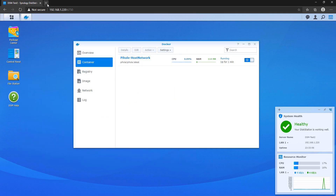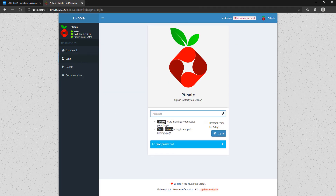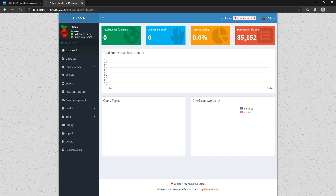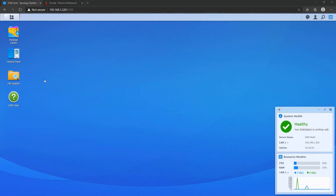We haven't actually configured the DNS portion for your clients yet. If you're not interested in the second option, you can skip to the end — I'll leave a timestamp in the description. The second option is setting up Pi-hole with a Mac VLAN network interface, which allows your Pi-hole instance to have its own IP address rather than using the host NAS's IP. Note that the latest version (5.1.1) does not work with this method — I'll be using version 5.1. Check the written instructions, as I'll update them when a newer version works correctly.